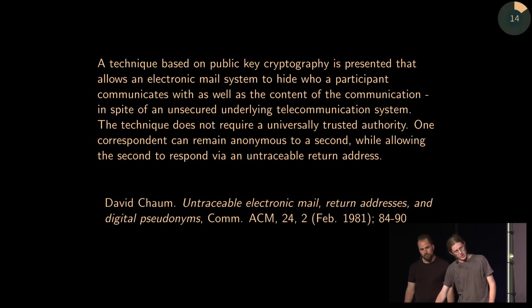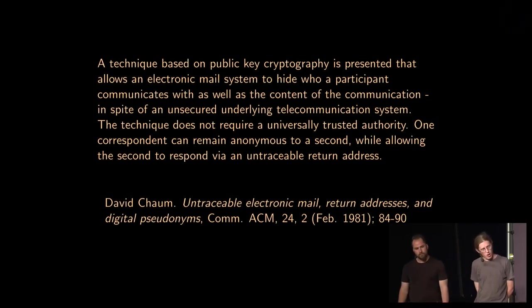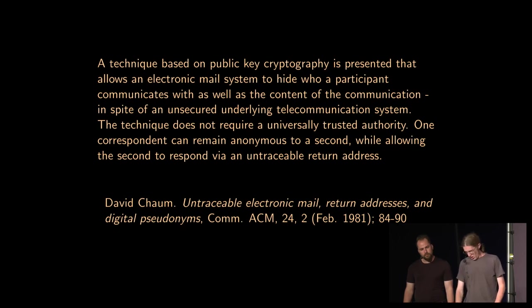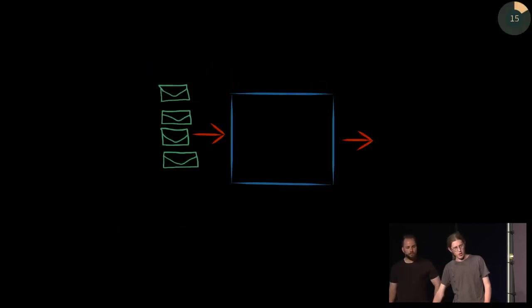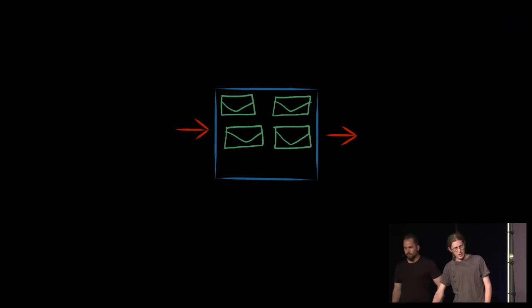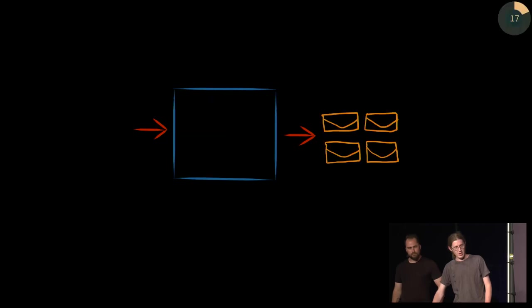Mixed networks were proposed around 1979; the paper came out in 1981. This is from David Chaum's paper 'Untraceable Electronic Mail, Return Addresses, and Digital Pseudonyms' from 1981. How do mix nets work? They're kind of like Tor — they have layers of encryption — but there's a big difference: they reorder messages. All messages are fixed size. Messages go into a mix; inside the mix, a layer of encryption is removed, and new messages come out in a different order that are bitwise unlinkable from the inputs.